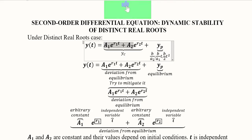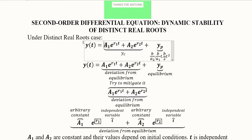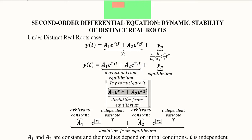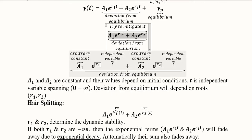We remember the formula of yc. In order to achieve convergence, the deviation part, that is yc, should mitigate — it should fade to zero. So we should focus on this part, which represents the deviation from equilibrium, and we will try to mitigate it.